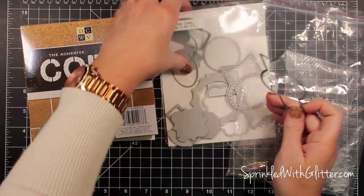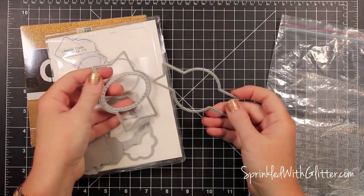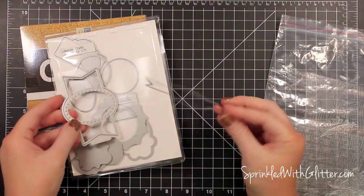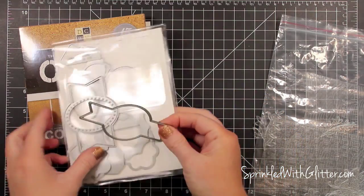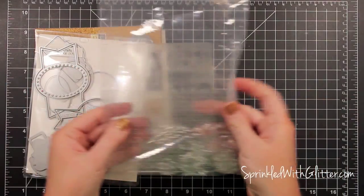I'm going to be using the Lifestyle Crafts and We Are Memory Keepers Label It Kit. These are a couple of my favorite shapes from that Label It Kit, but I'm going to be using that circle one there. There's also some really cool versatile shapes in that kit as well.